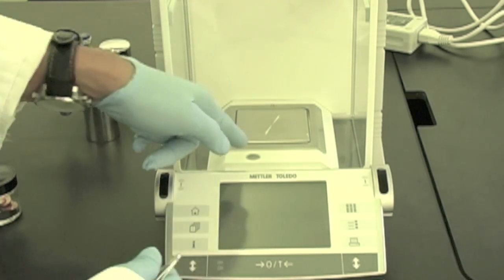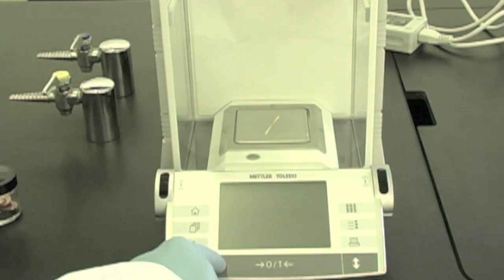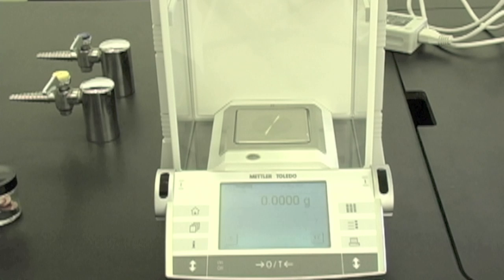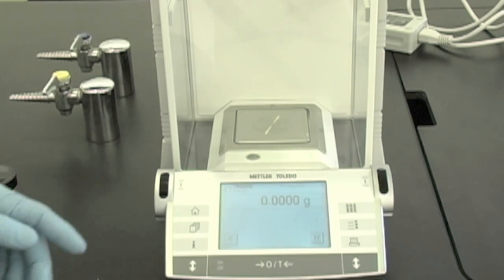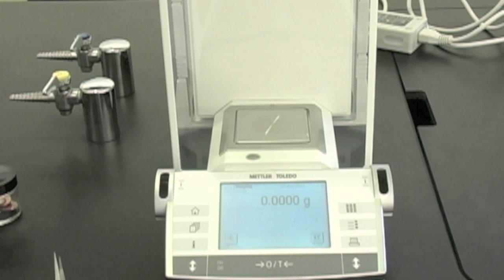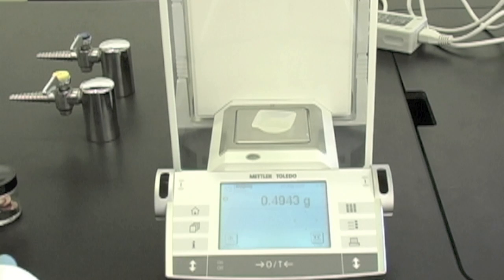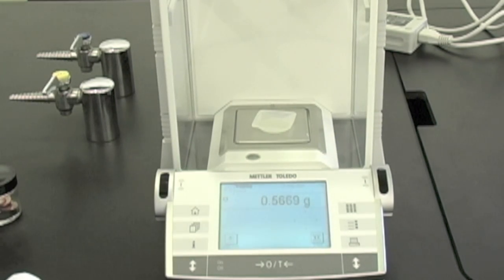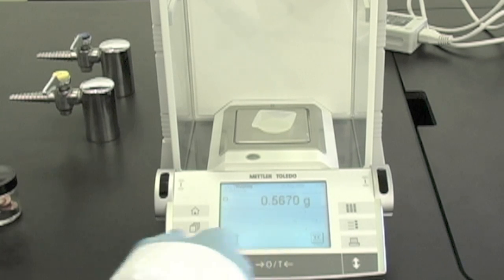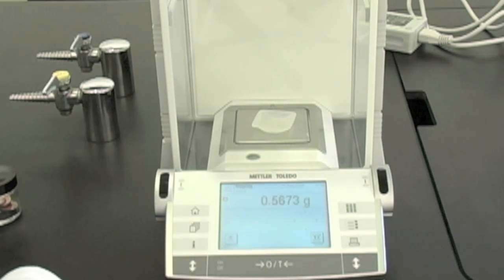Again, we want to make sure that it's level. Turn on the scale. Wait for the display to show. At this point, the scale should already be on because the scale needs to be warmed up for at least 30 minutes. Once it's stabilized, then go ahead and open the scale. We're going to add a weighing boat on here. Close the chamber. Tare. Wait for it to stabilize.